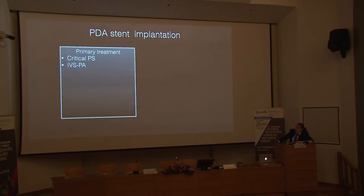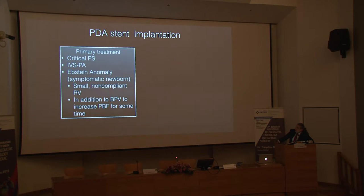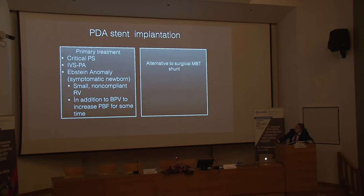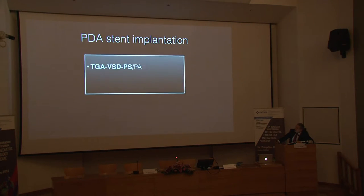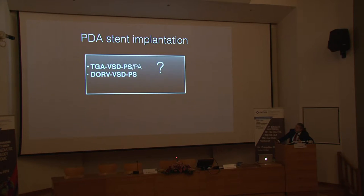PDA stenting can be a primary treatment in critical pulmonary stenosis, pulmonary atresia with intact ventricular septum, or neonatal Ebstein's anomaly with functional pulmonary atresia — cases where the small, non-compliant RV needs additional pulmonary blood flow temporarily. After three to six months, the RV compliance improves and the PDA may no longer be needed, potentially curing the patient. It can also serve as an alternative to surgical BT shunts in univentricular repair candidates with pulmonary stenosis, or in VSD with pulmonary atresia and non-confluent pulmonary arteries, buying time for surgical confluence.